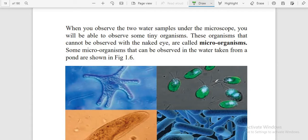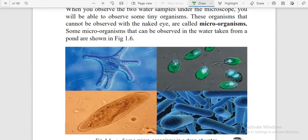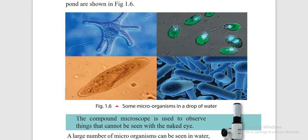You should write in your exam: 'The organisms that cannot be observed with the naked eye are called microorganisms.' Some microorganisms that can be observed in water taken from a pond include one shaped like a starfish — that is called amoeba.